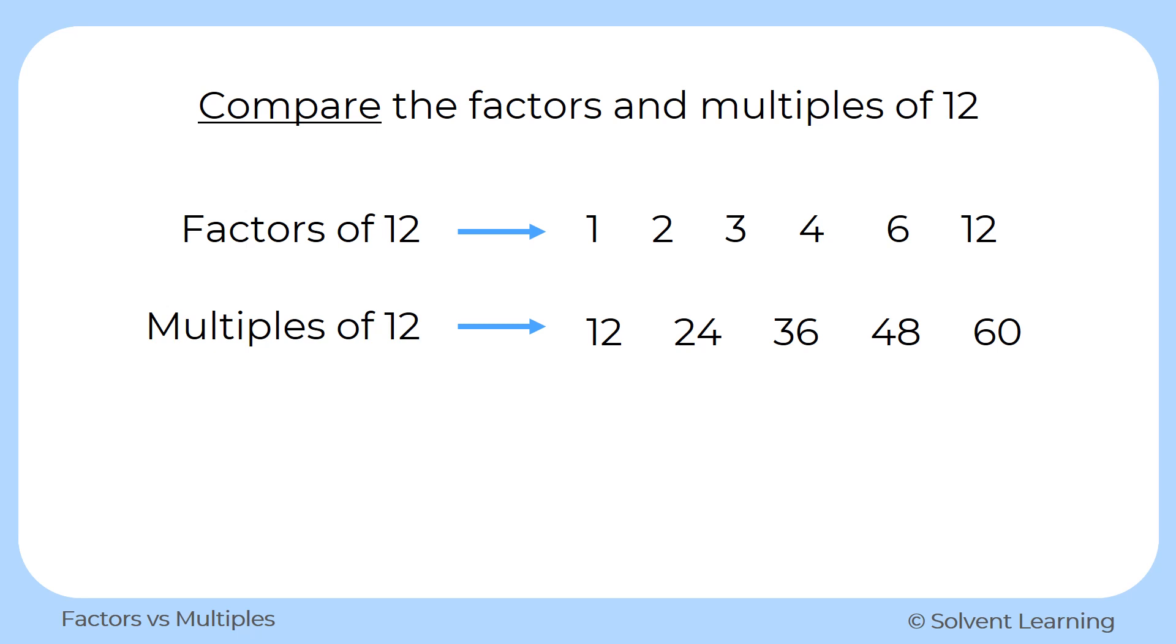The other way is to find the product of 12 times 1, then 12 times 2, 12 times 3, and on and on. Now remember, there's an infinite number of multiples. So this list can go on and on forever, but we're just going to stop here at the number 60.